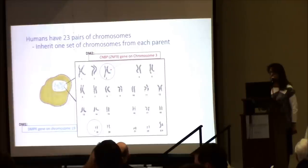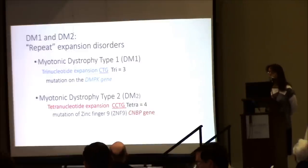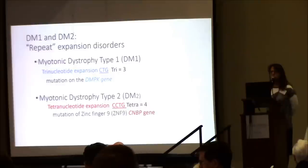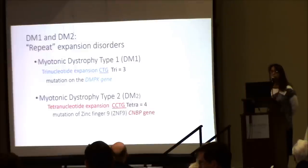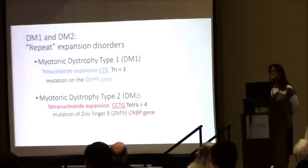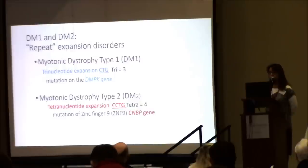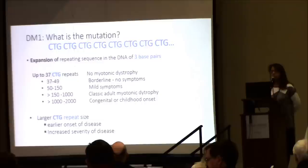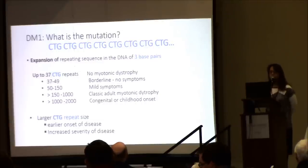These disorders have been called repeat expansion disorders. In DM1, a trinucleotide sequence — CTG — is repeated over and over, exceeding the normal range, due to a mutation on the DMPK gene. In DM2, a different mutation on a different gene causes four nucleotides — CCTG, a tetranucleotide — to repeat excessively. So the repeat in DM1 is CTG CTG CTG CTG, and in DM2 it is CCTG CCTG.